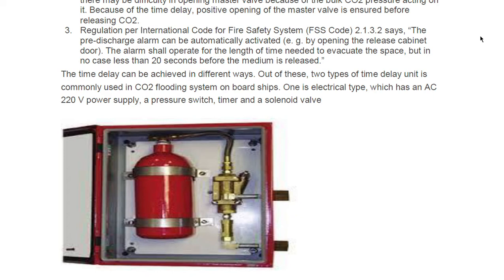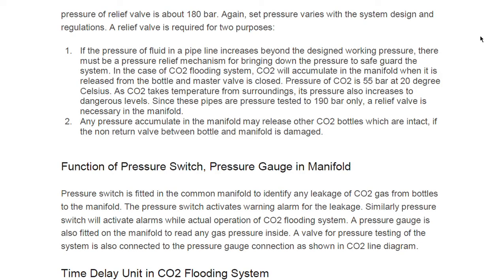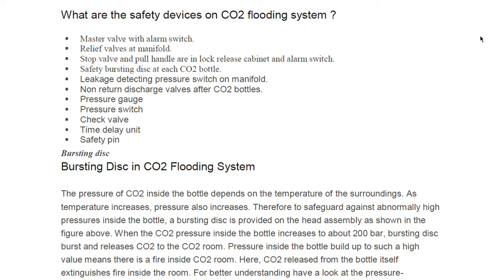So we have covered: bursting disk, time delay unit, pressure gauges, pressure switches, relief valve, master valve, safety pin, and check valve. We saw the function of the bursting disk, the time delay unit, why pressure switches and pressure gauges are provided, and why we have a non-return valve. Thank you for your time. In the next video I will be covering yearly maintenance, 10-yearly maintenance, and 5-yearly maintenance of the CO2 system. Stay tuned — all the best.